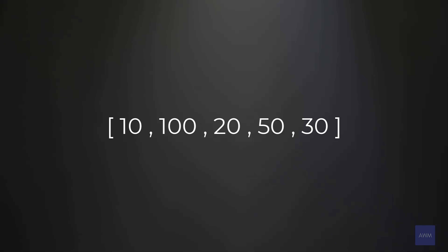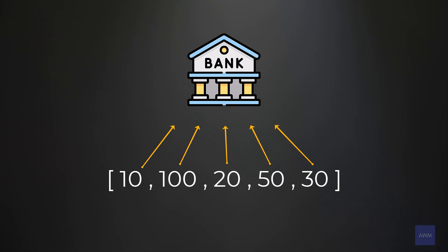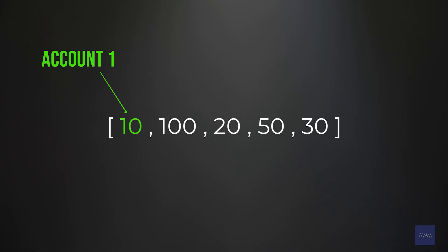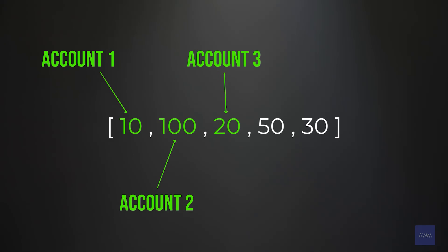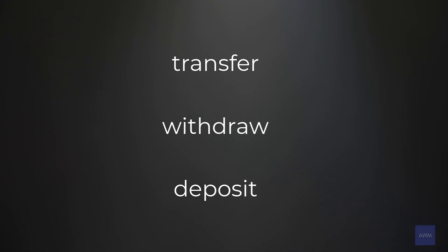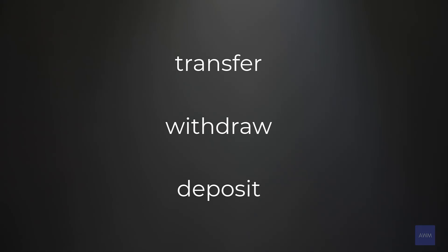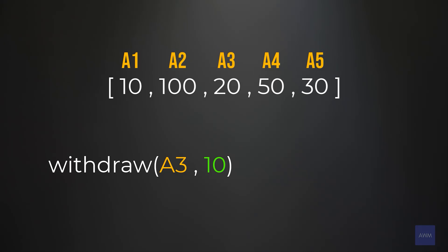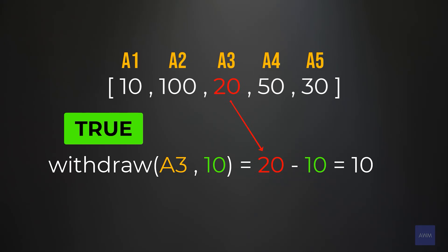We are given an array of balances representing the money in each account in the bank. In this example, account 1 starts with $10, account 2 starts with $100, account 3 starts with $20, and so on. We need to implement three methods in the bank class: transfer, withdraw, and deposit. If we withdraw $10 from account 3, we should return true because this is a valid operation. The new balance of account 3 would be $20 minus $10, which is $10.